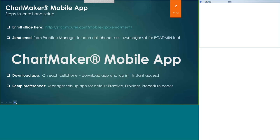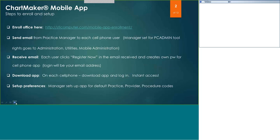So step one, you'll go to our website and click the enrollments link, or you can use this link here on the screen, which will directly go to that mobile app enrollment. This allows our STI team to turn your office on for the health portal, which turns on the mobile ability to your server. That may take several days, but you'll receive an email from our team once you can proceed to the next step.